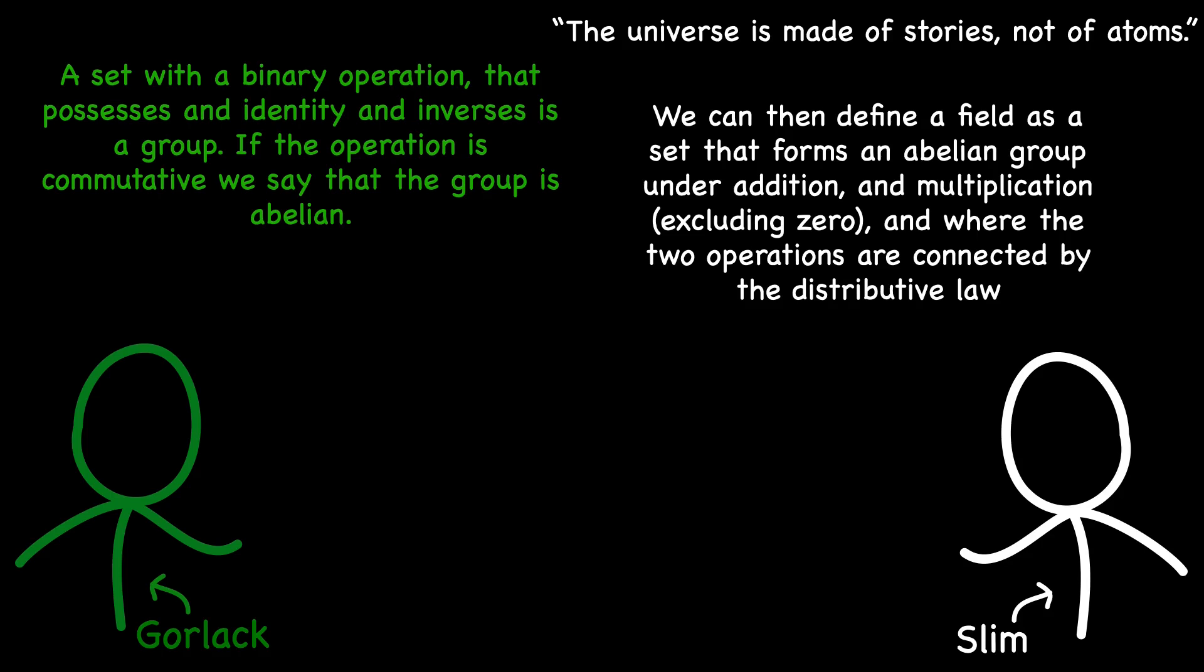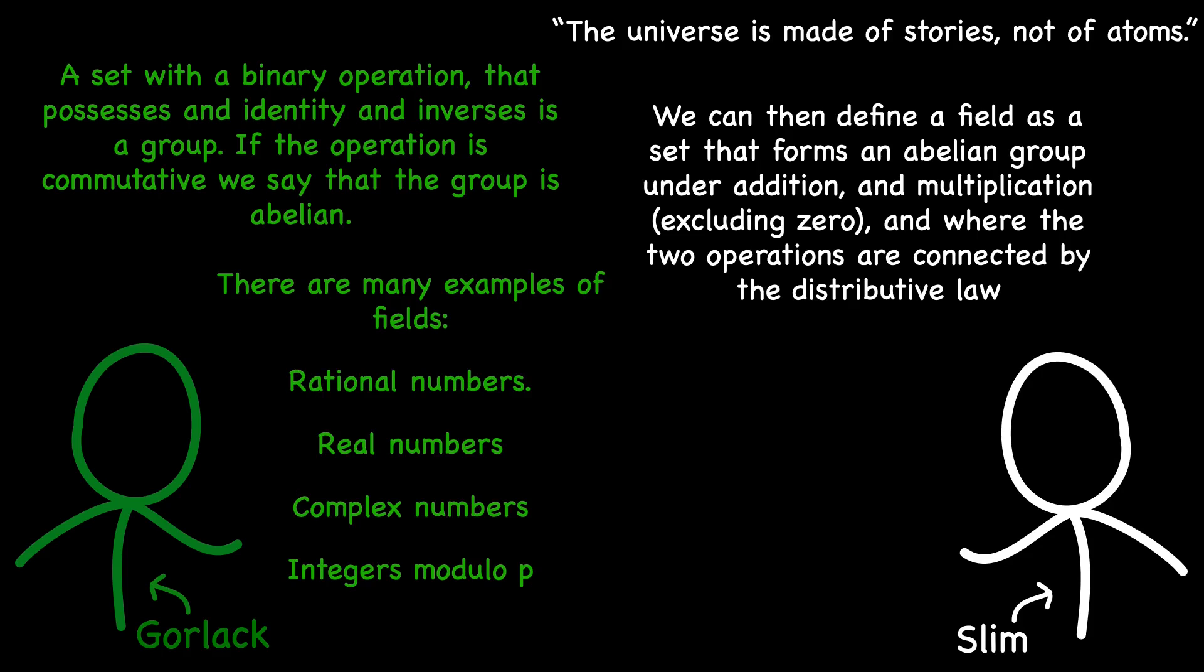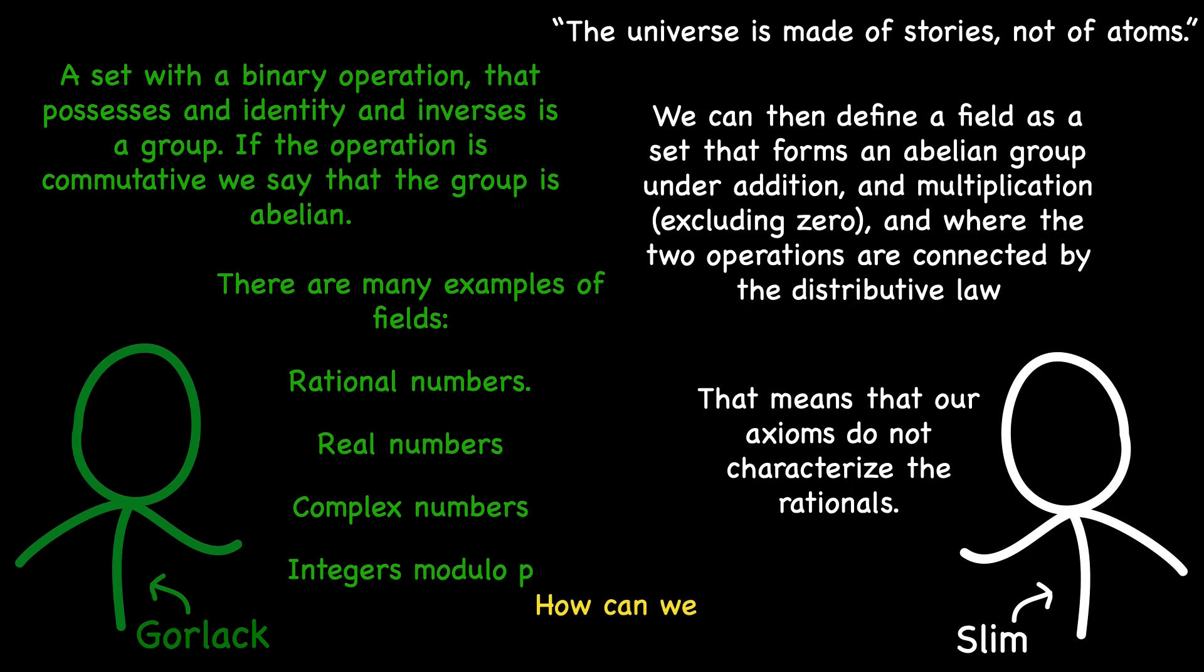Various instances of fields abound, with the most prevalent ones encompassing the rational numbers, the real numbers, the complex numbers, and numbers modulo p for a prime number p. This array of examples underscores the fact that the field axioms do not uniquely characterize the rational numbers. What additional assumptions could we introduce to achieve this unique characterization?